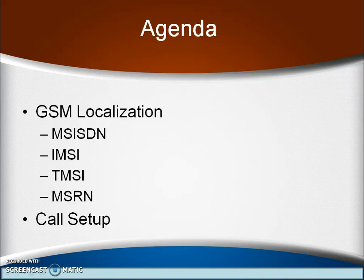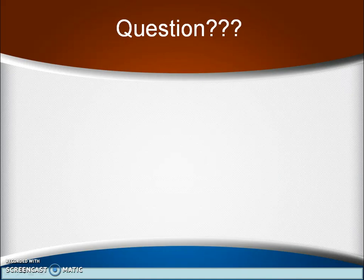Our today's agenda is to learn the GSM localization and the call setup procedure. Before moving to this particular topic I would like to ask you one question: suppose John and Johnny — these are the two GSM mobile users — and John wants to call Janardhan. When both are from the same country, then what exactly happens?